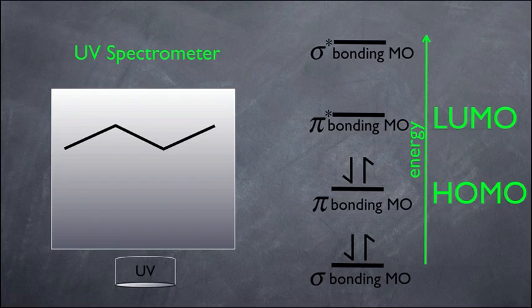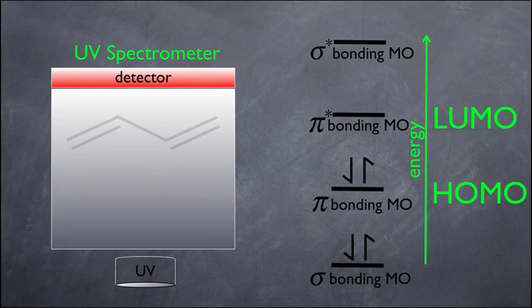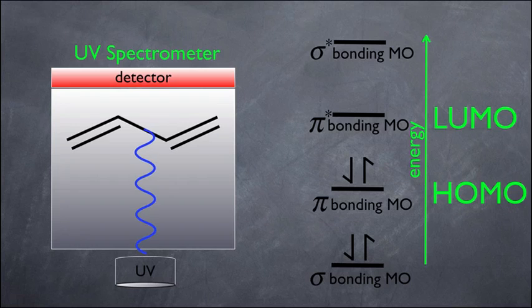Let's say we put a non-conjugated molecule into the UV spectrometer. We have a UV light — like a flashlight — that can shine all the various frequencies and wavelengths of UV light. If we place a detector on the other side and shine all those UV lights, the light will go right through the non-conjugated molecule and the detector will detect it — meaning no UV light is absorbed. However, if we put a conjugated system in the machine and shine all different UV wavelengths, the molecule will actually absorb that UV light.